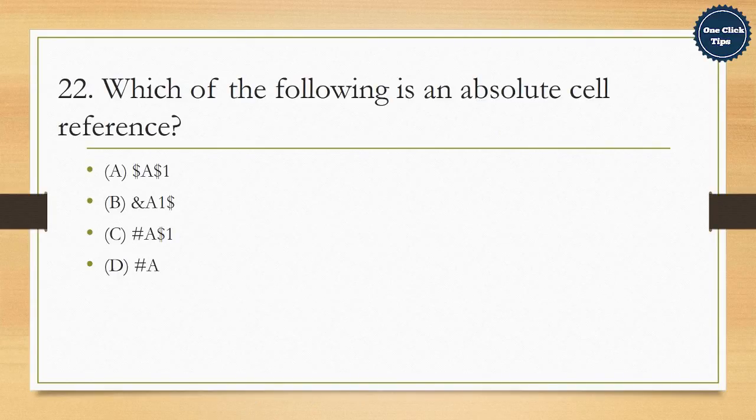22. Which of the following is an absolute cell reference? A. Dollar A dollar one, B. A one dollar, C. Hashtag A dollar one, D. Hashtag A one hashtag. The correct answer is A. Dollar A dollar one.